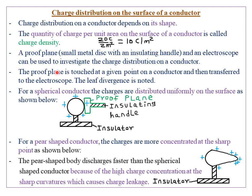The proof plane takes charges from the conductor. This is the insulating handle, and this is the proof plane. You place the proof plane on a particular area of the conductor so that it transfers charges from the conductor to the proof plane. You then carry the proof plane using the insulating handle and transfer it to the brass cap of an electroscope. If there are charges on the proof plane, the divergence of the electroscope leaf will increase; if there are fewer charges, the divergence will be very small.